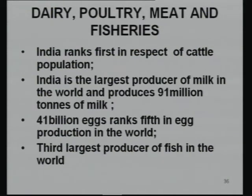The next component is dairy, poultry, meat, and fish. As a fruit and vegetable student, there will be less focus on dairy, but you must know that India ranks first in dairy cattle. Milk production in the country is the highest at 91 million tons.